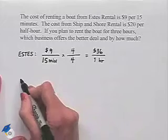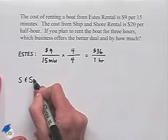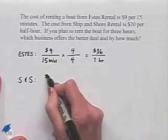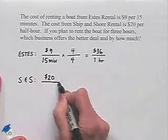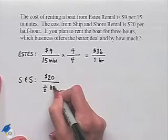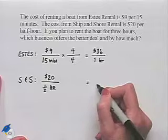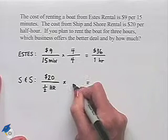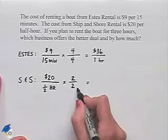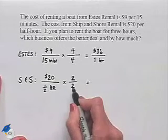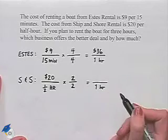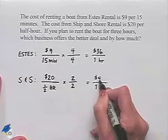Well, next let's look at Ship and Shore. Their value that is given to us is $20, and that's going to be for one half hour. In order to figure out what that is in terms of one hour, we're going to multiply times two over two. Again, multiplying by one, but doing so in order to end up with a value of one hour in the denominator. $20 times two is going to give us $40.